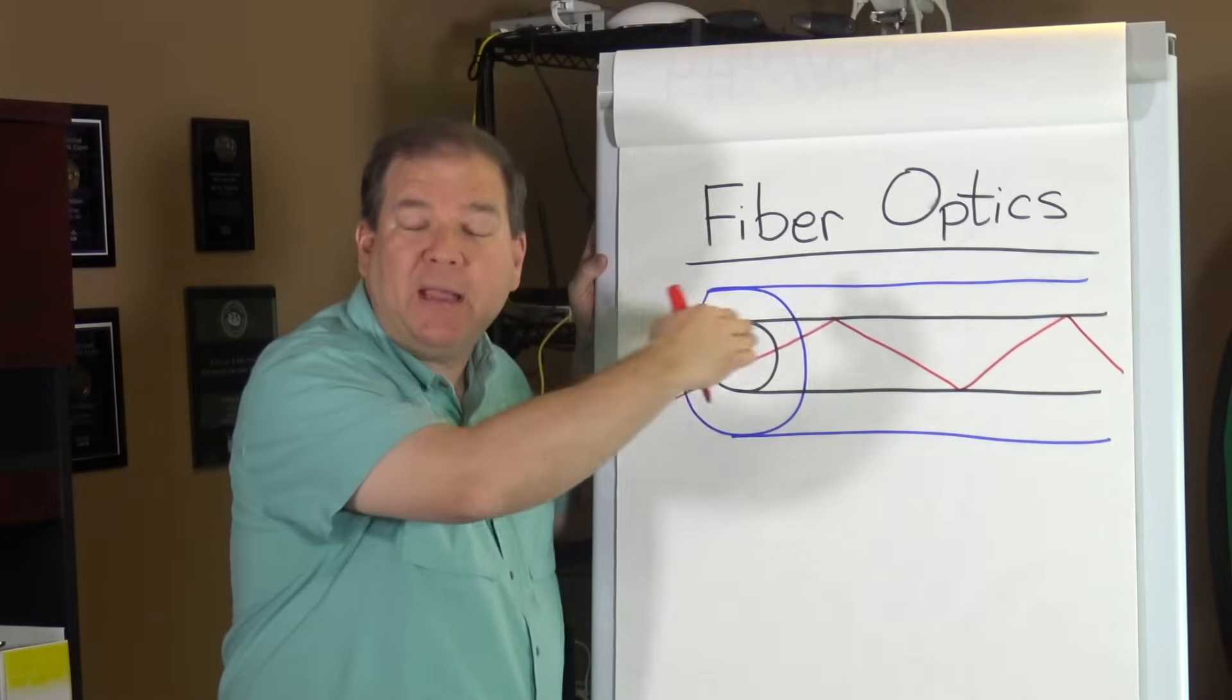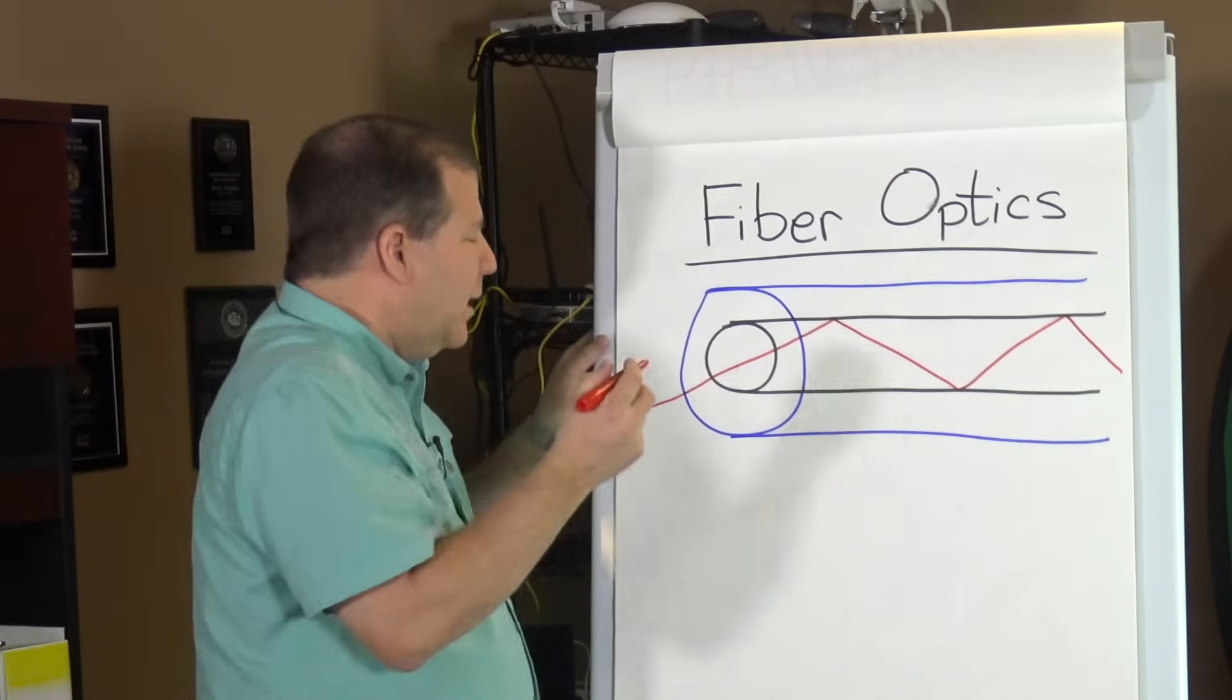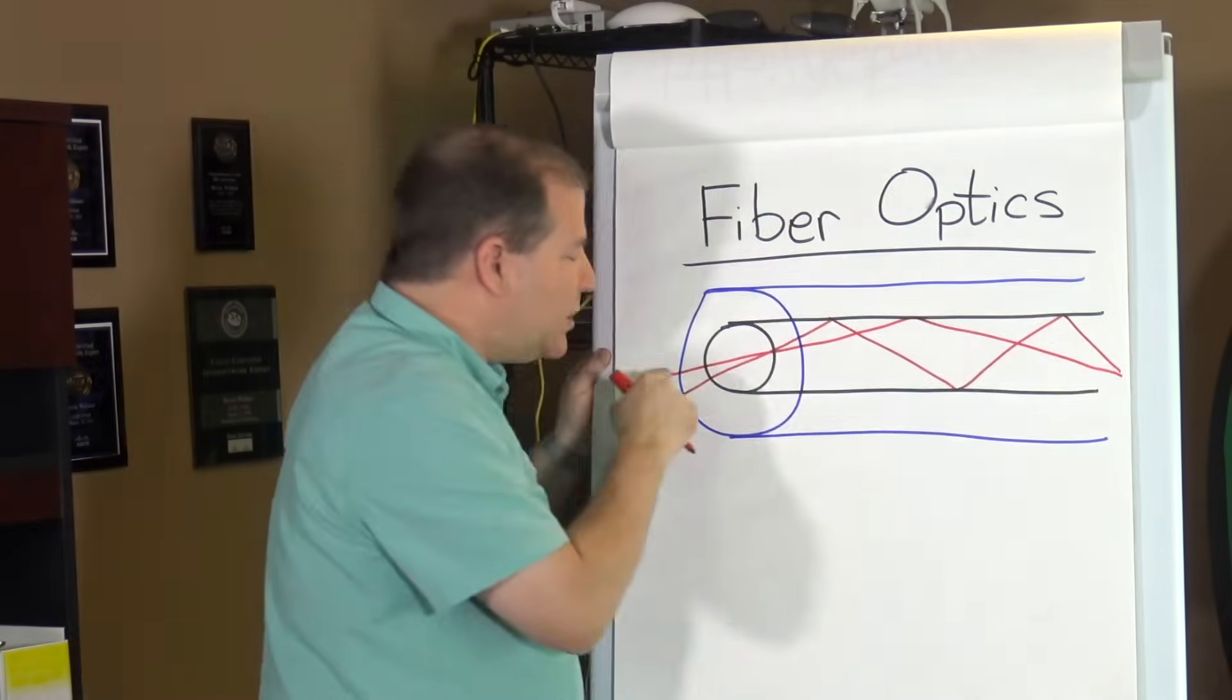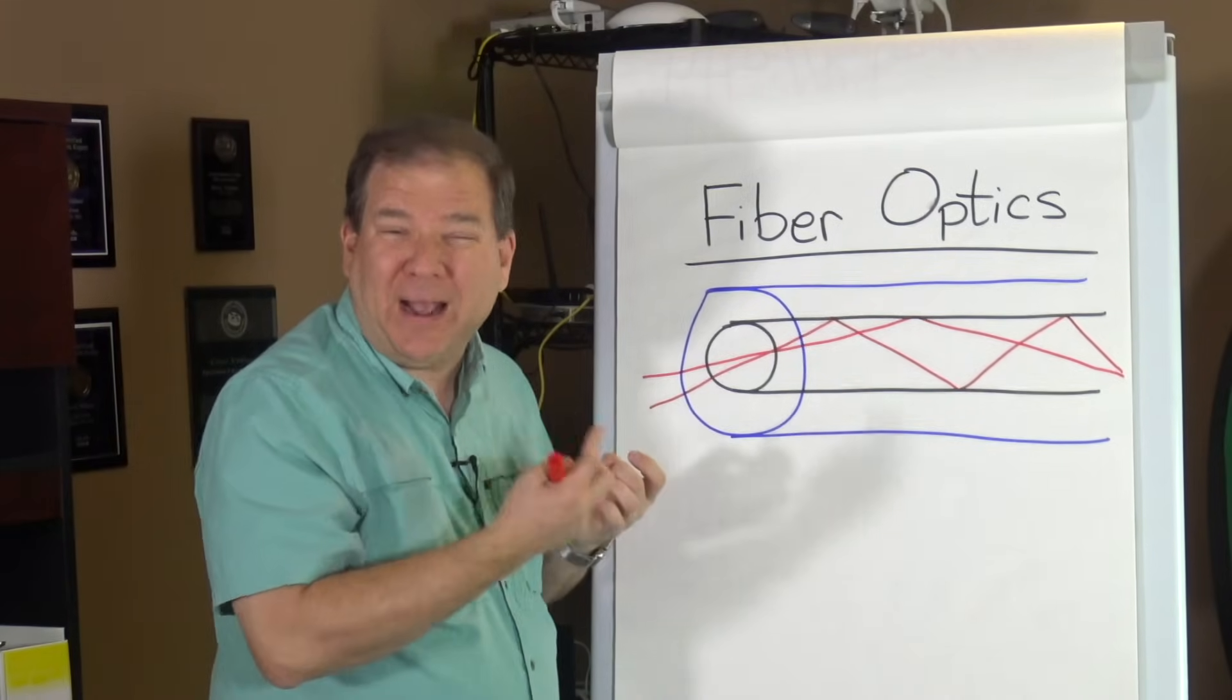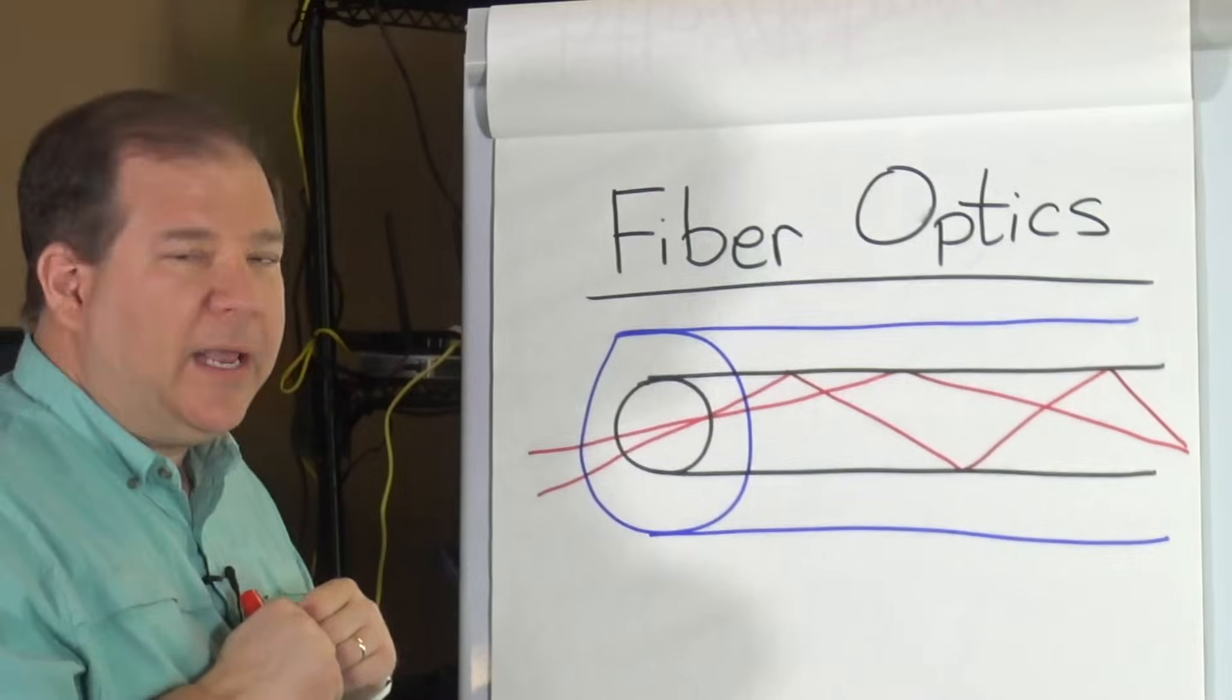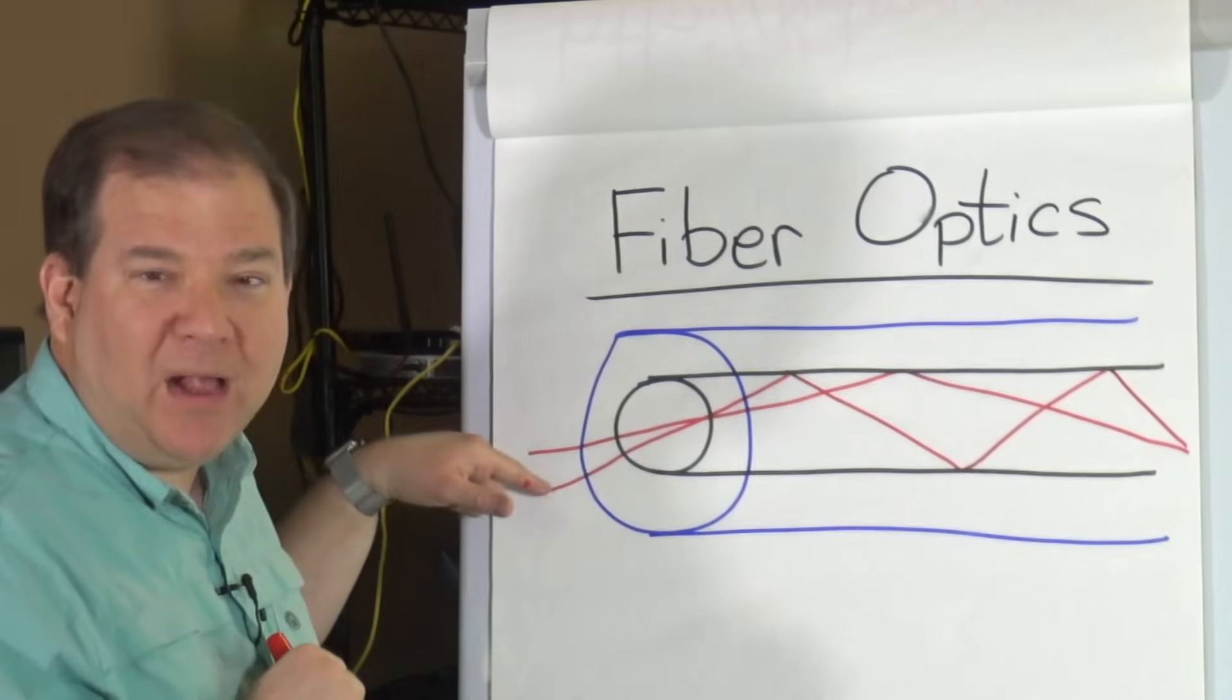However, if this diameter is too large, here's what can happen. Let's say that we've got another path of light going like this. This is called a different mode of propagation. The laser came in at a slightly different angle. And as a result, it's not bouncing as much as the original beam of laser light did. Can you imagine if we extended this for two or three kilometers? The distance being traveled by each beam of light is quite a bit different.